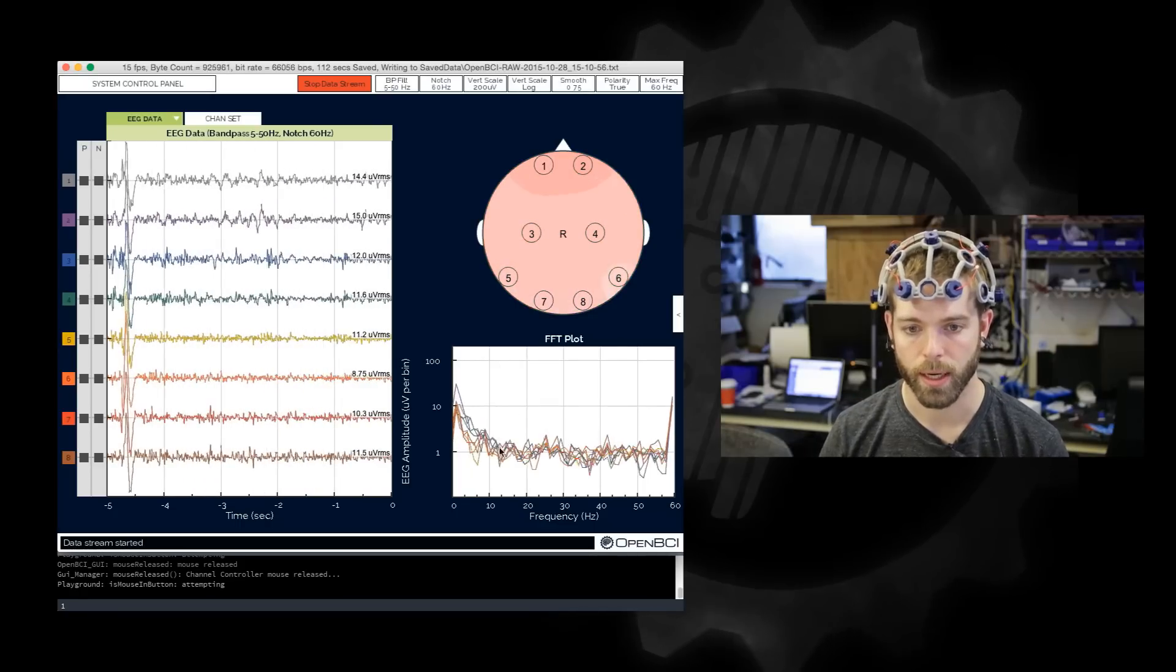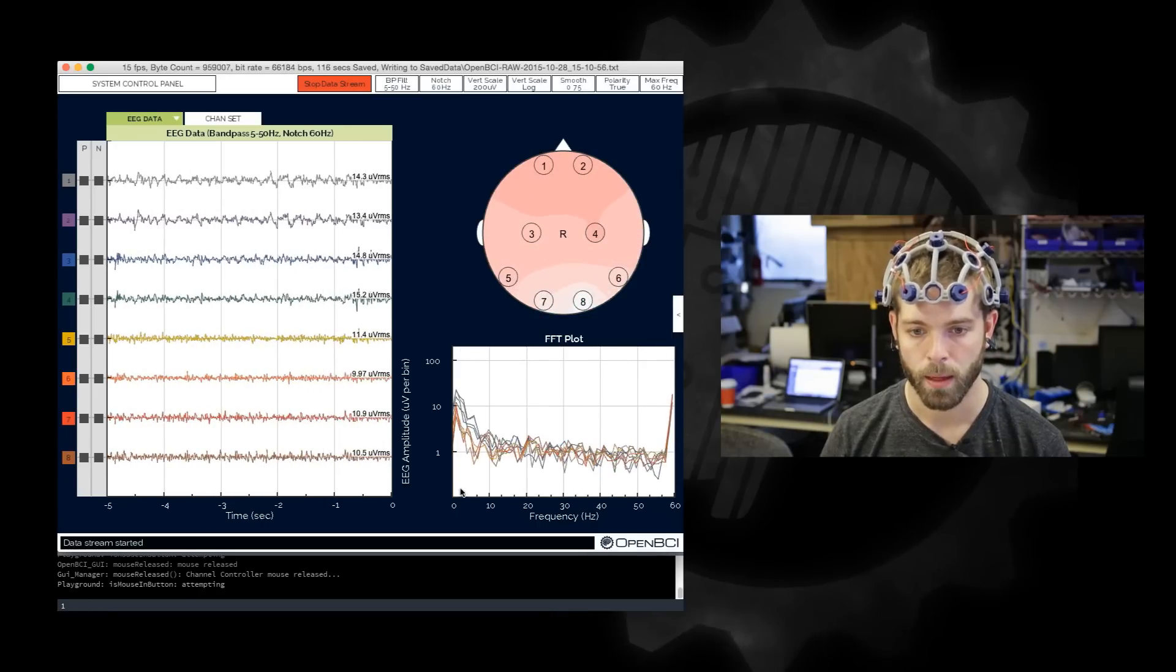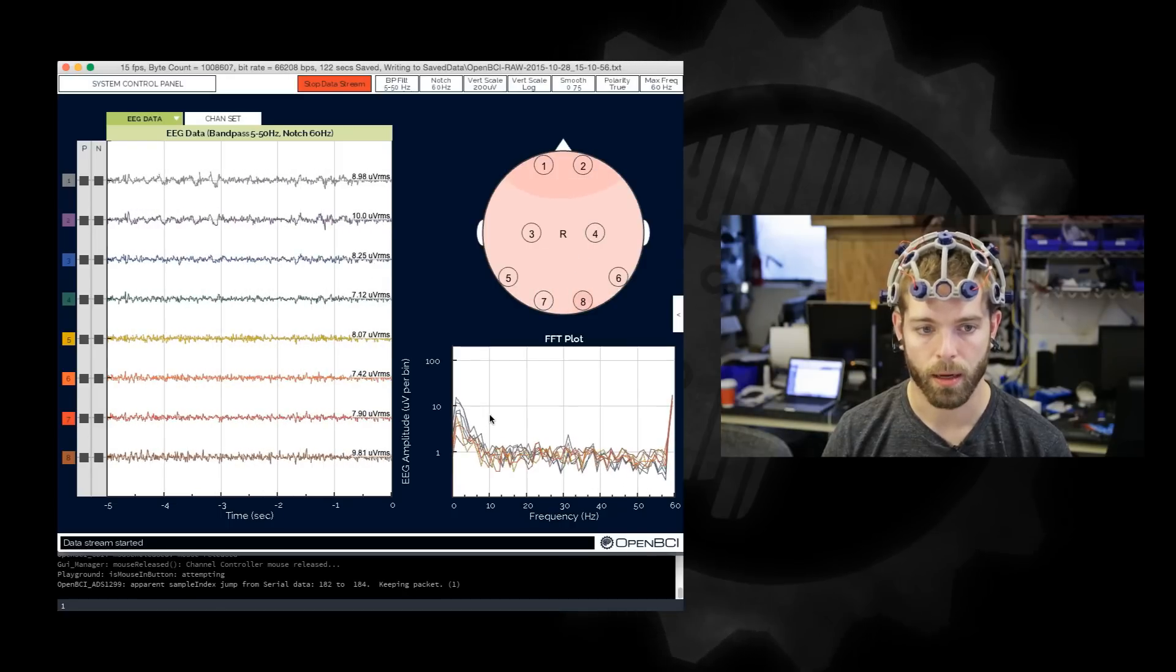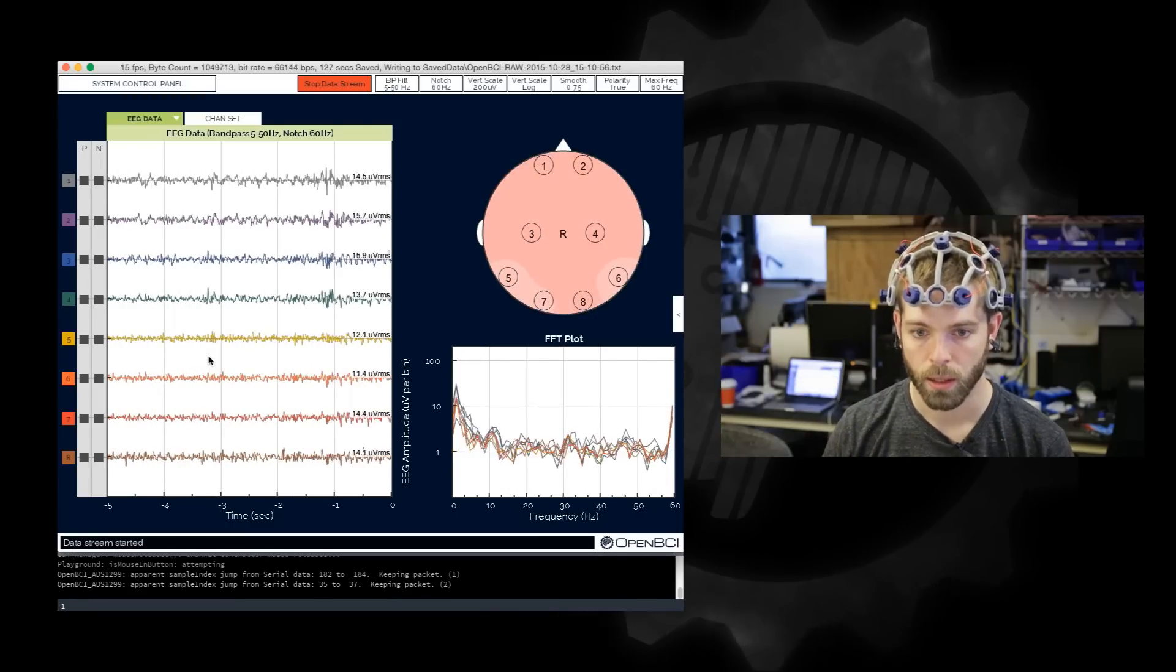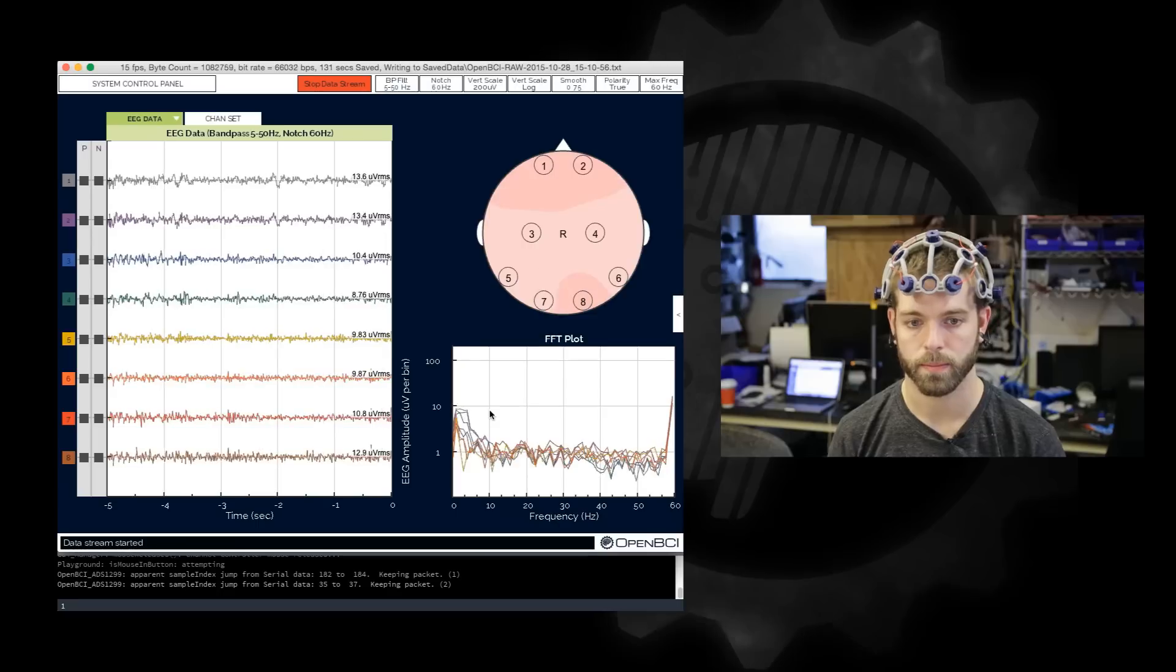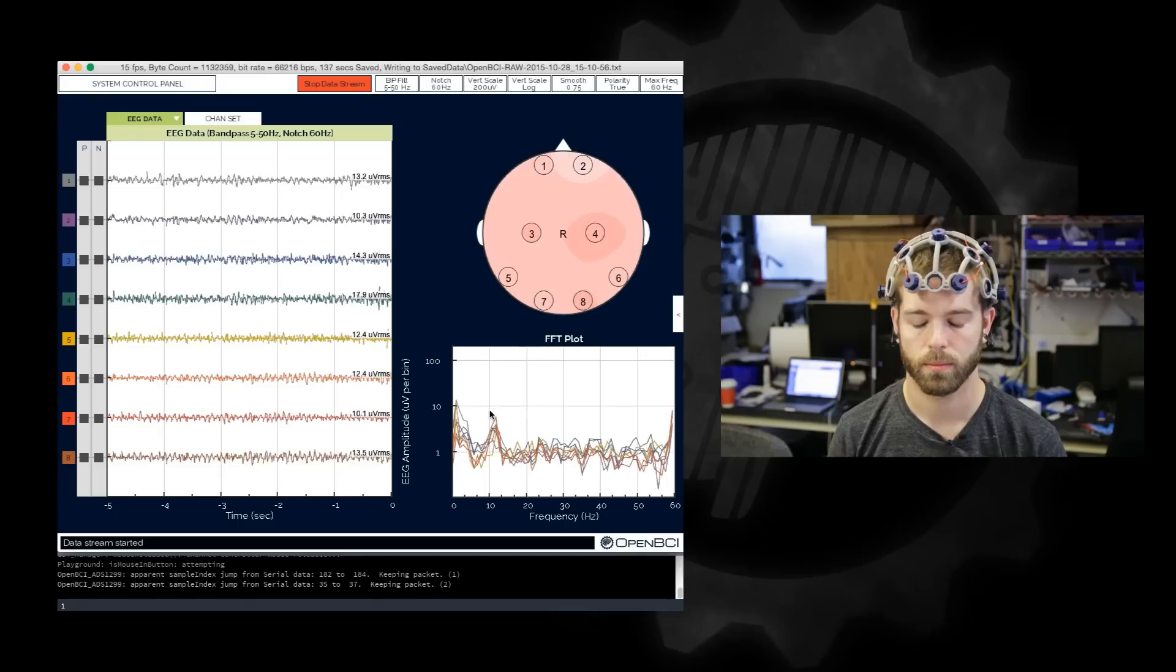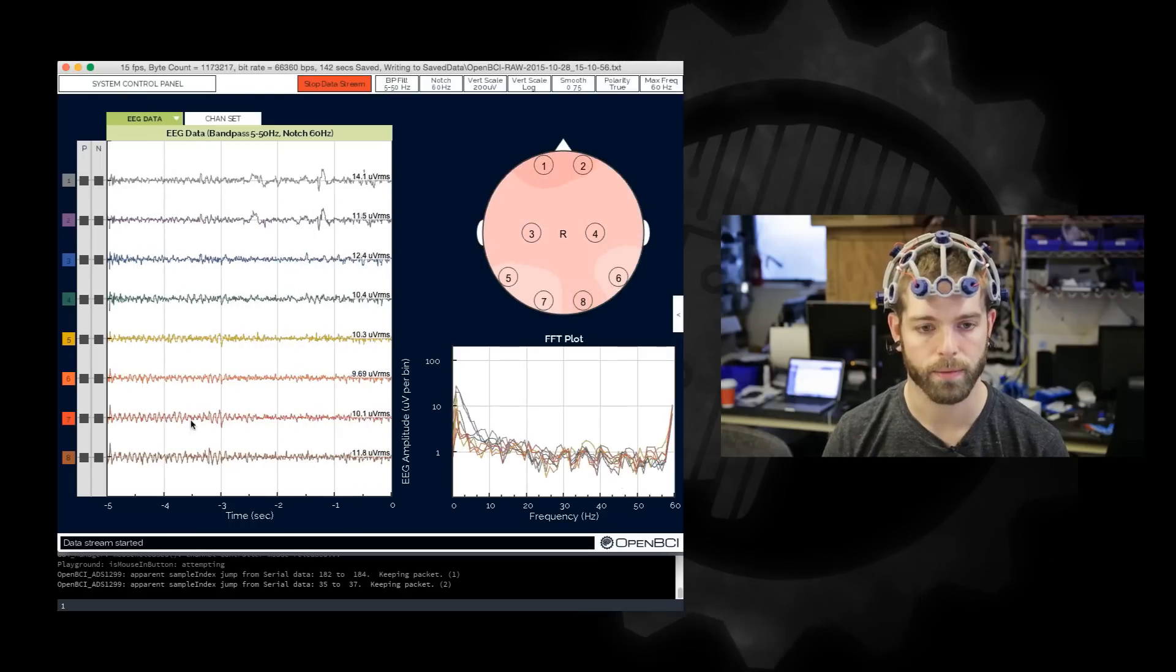So now what I'm going to do is demonstrate a brainwave. So if you look down at the FFT plot down here at about 10 Hertz, if I close my eyes you'll see a spike of data primarily in channels five, six, seven, and eight because those channels are over my visual cortex. But if I close my eyes you should see a spike around 10 Hertz. And there it is. So that's alpha brainwaves.